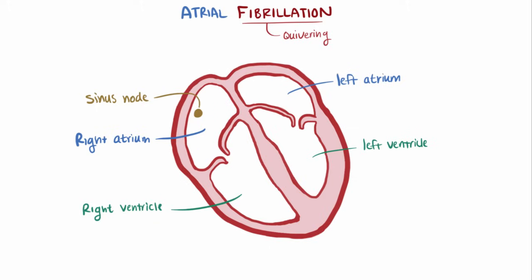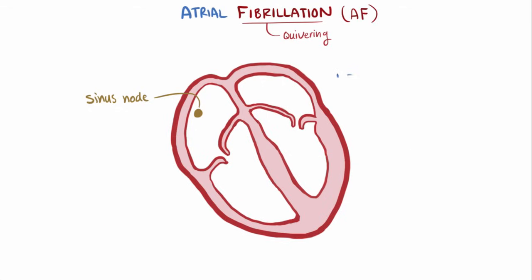With atrial fibrillation — or AFib, or sometimes AF — signals move around the atria in a completely disorganized way that tends to override the sinus node. Instead of one big contraction, you get all these mini contractions that make it look like the atria are just quivering.